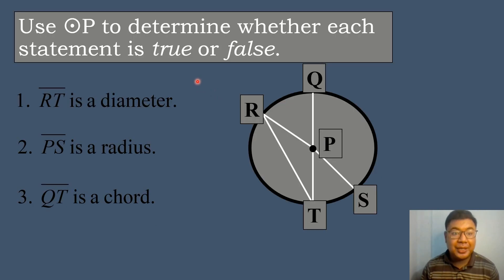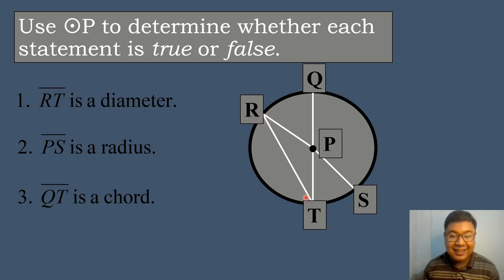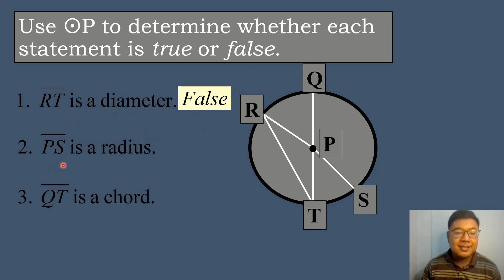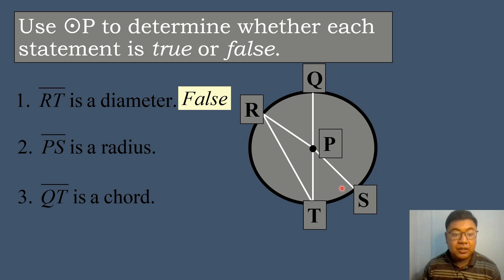Let's try to answer the following exercises. Use circle T to determine whether each statement is true or false. Number 1: segment RT is a diameter. This is not a diameter because it does not pass through the center of the circle — instead, it is just a chord. So the answer for number 1 is false. Number 2: segment PS is a radius. One endpoint is on the center of the circle and the other endpoint is on the circle, so segment PS is a radius. The answer is true.